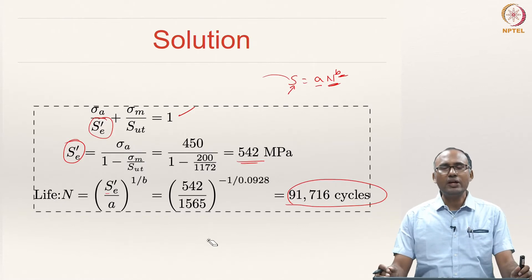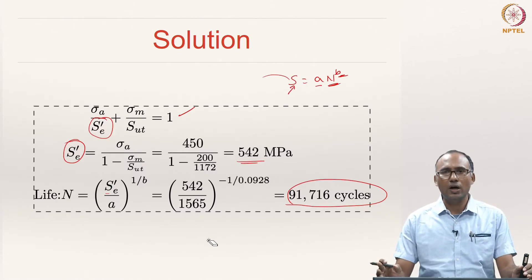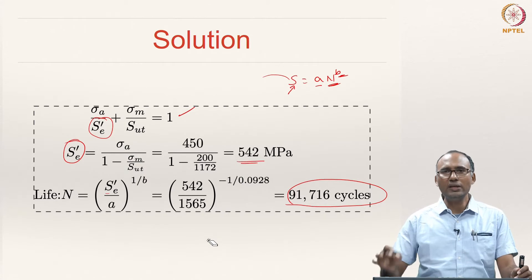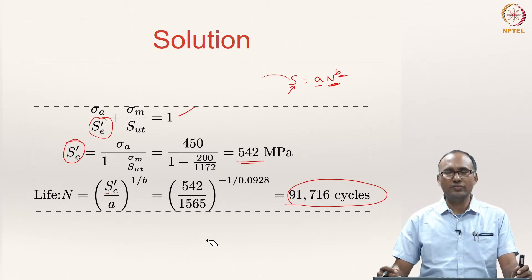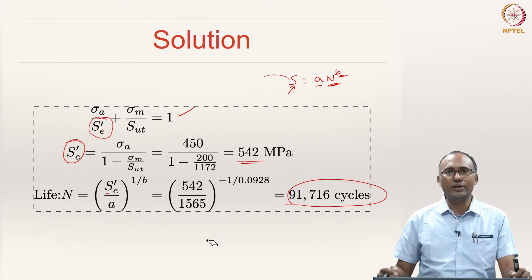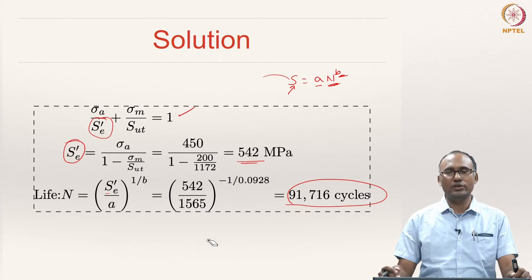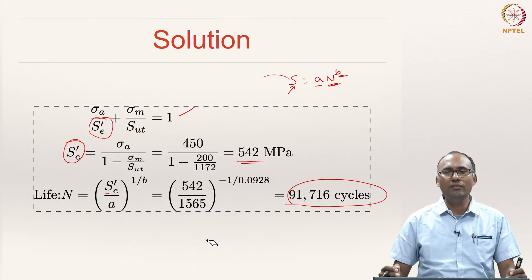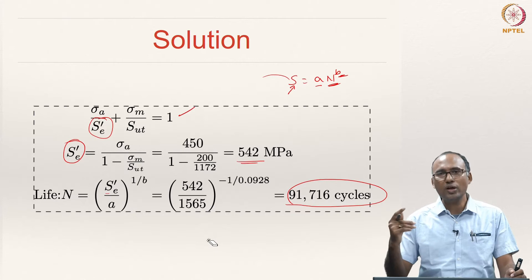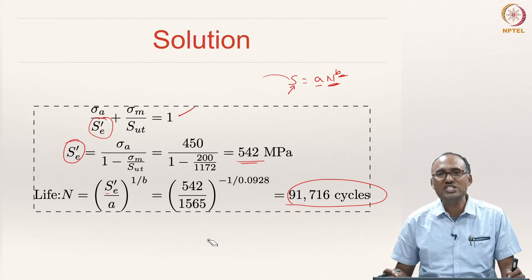So far whenever we are talking about fatigue failure design, we are talking about mean stress and alternating component of the stress or stress amplitude as if stress is a scalar quantity, but it is not a scalar quantity. You can actually talk about only one stress component when you have uniaxial loading.